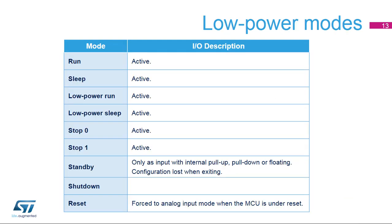I/O pins remain active in all modes except standby and shutdown, where the only available configuration is input with internal pull-up, pull-down resistor, or floating input. When exiting shutdown mode, the I/O configuration is lost. When the MCU is under reset, I/O pins are forced into an analog input mode.